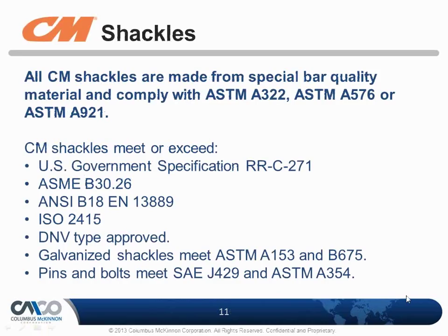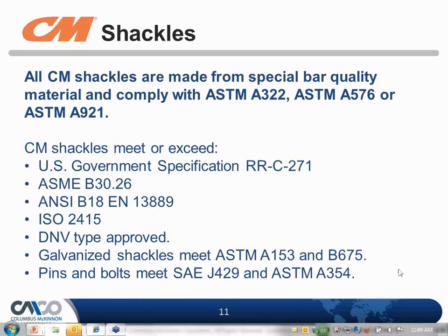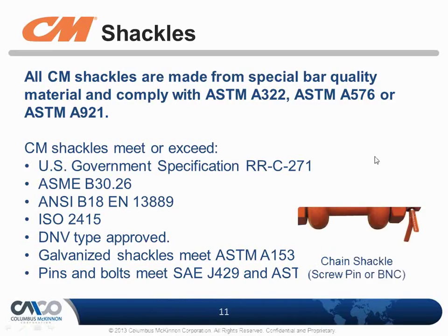All CM shackles are made from specially bar quality material and comply with ASTM A322, ASTM A576, or ASTM A921. We also meet U.S. government specifications RRC 271, ASME B30.26, the EN standards ISO, and DNV C-Type. Galvanized shackles meet ASTM A153 and B675, and pins and bolts meet SAE J429 and ASTM A354. A lot of quality goes into our shackles, and we do extensive testing on them to ensure they're safe to use.